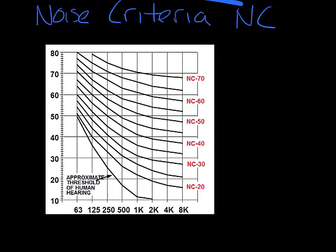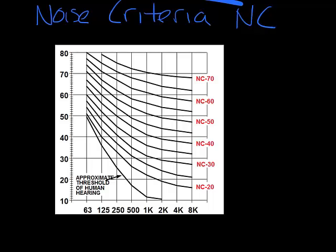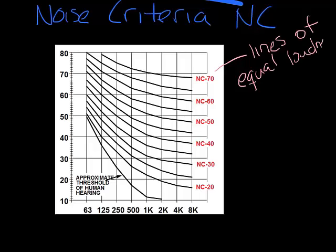The NC lines are essentially lines of equal perceived loudness. Every point on the NC line sounds as loud as the other points on the line. You can see that the NC curves have high decibels in the low frequencies. If you recall from the Sound Basics podcast, low frequency sounds have to be louder for us to hear them.